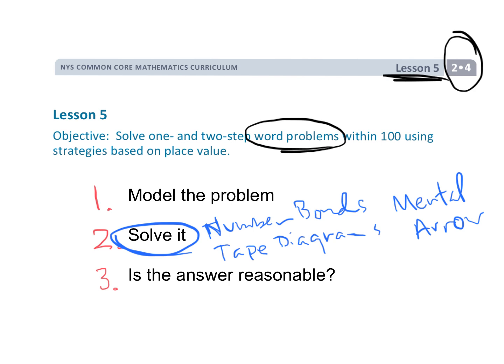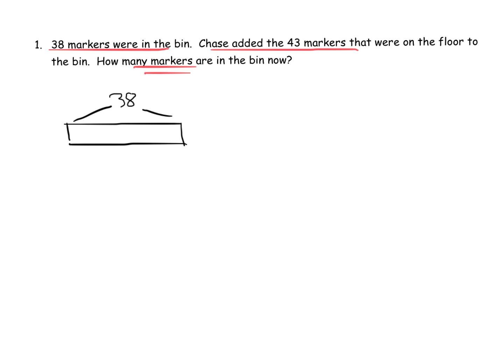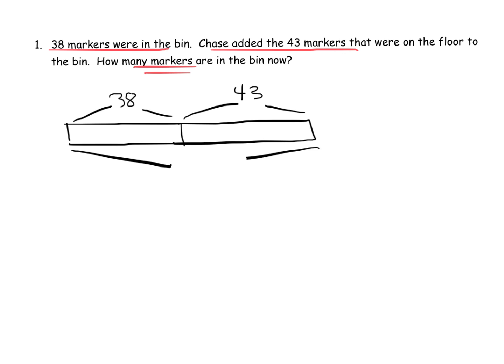The first problem: 38 markers are in a bin. Chase added 43 markers that were on the floor to the bin. How many markers are in the bin? One way to model this with a tape diagram is what most teachers know as a part-part-whole: here's our 38 markers, here's the 43 markers Chase added, and here is our question mark — that's the whole.